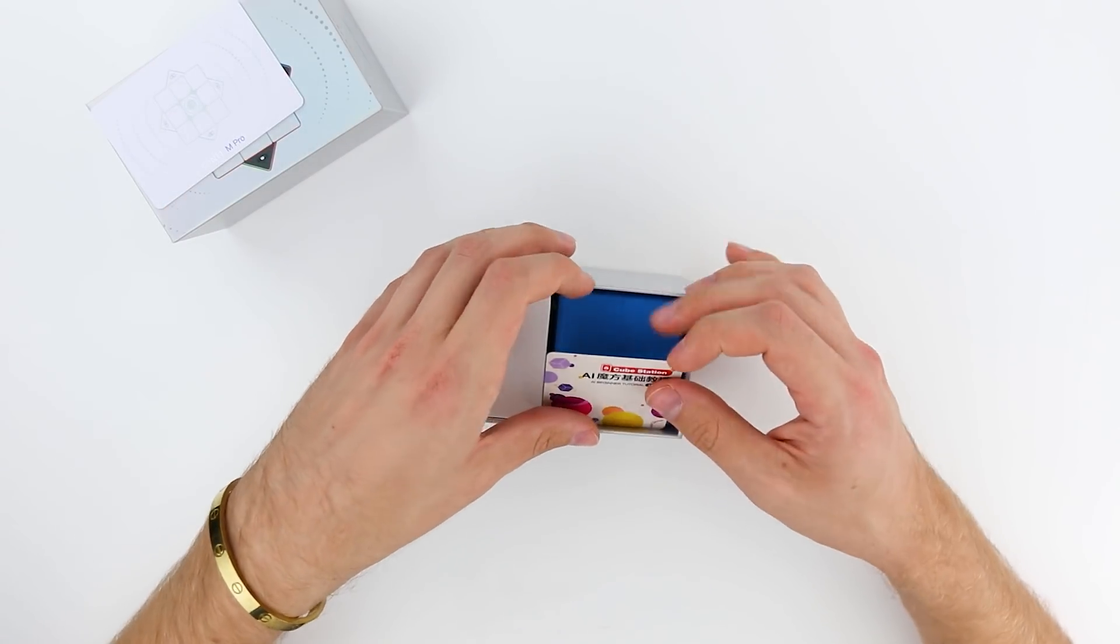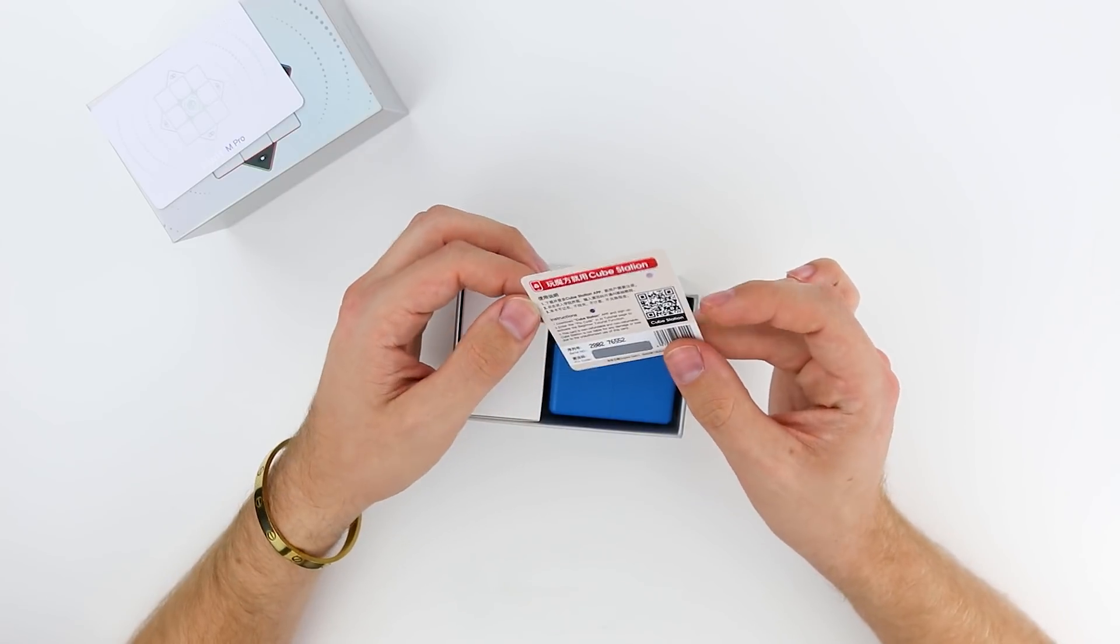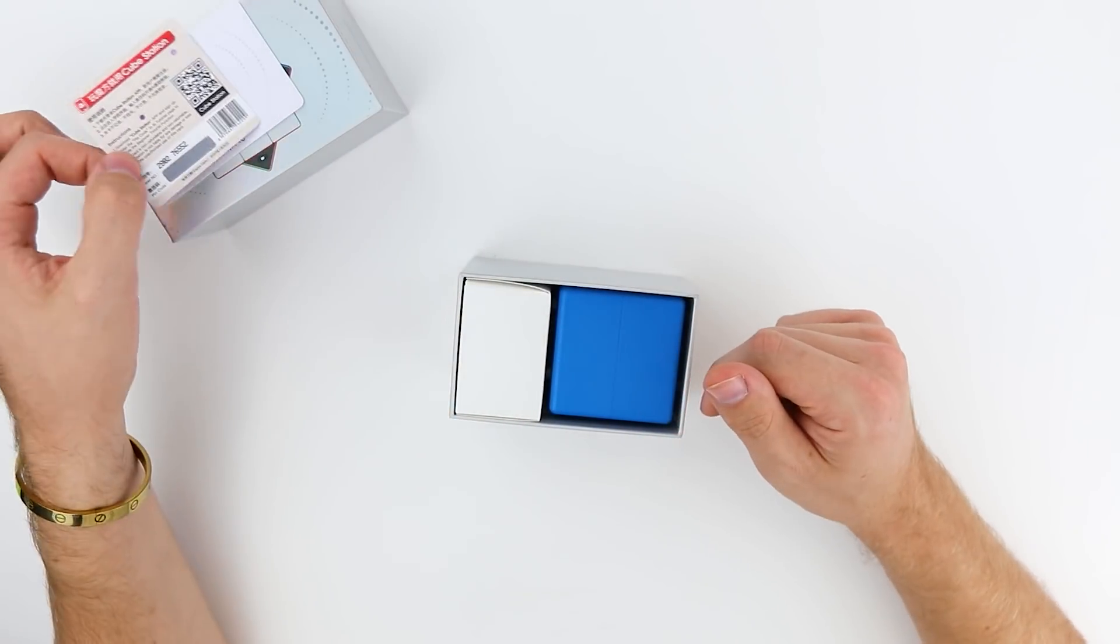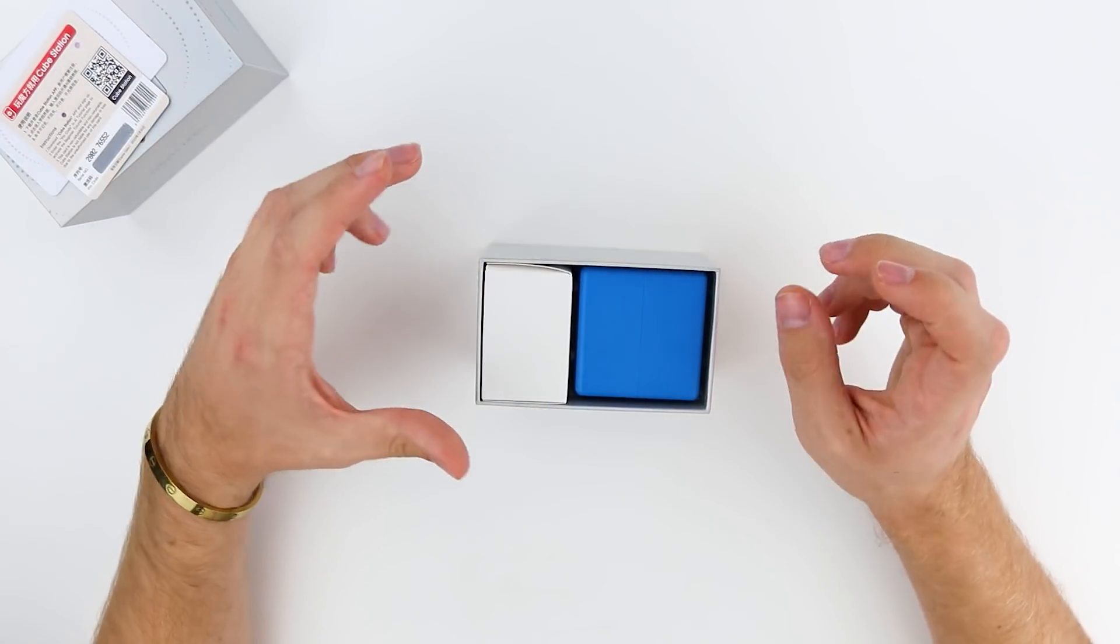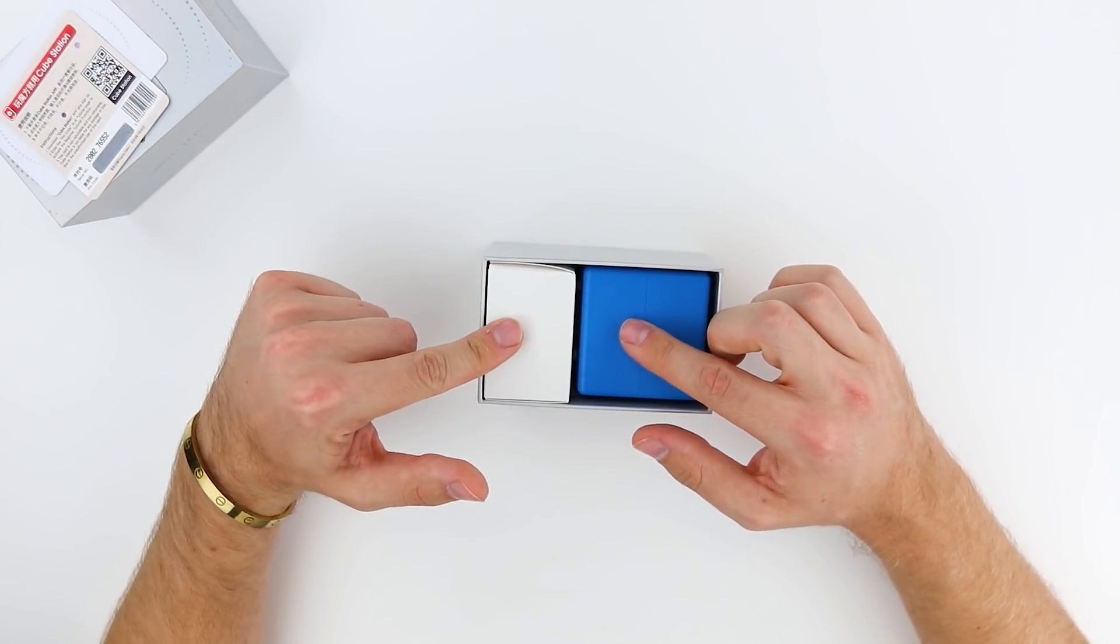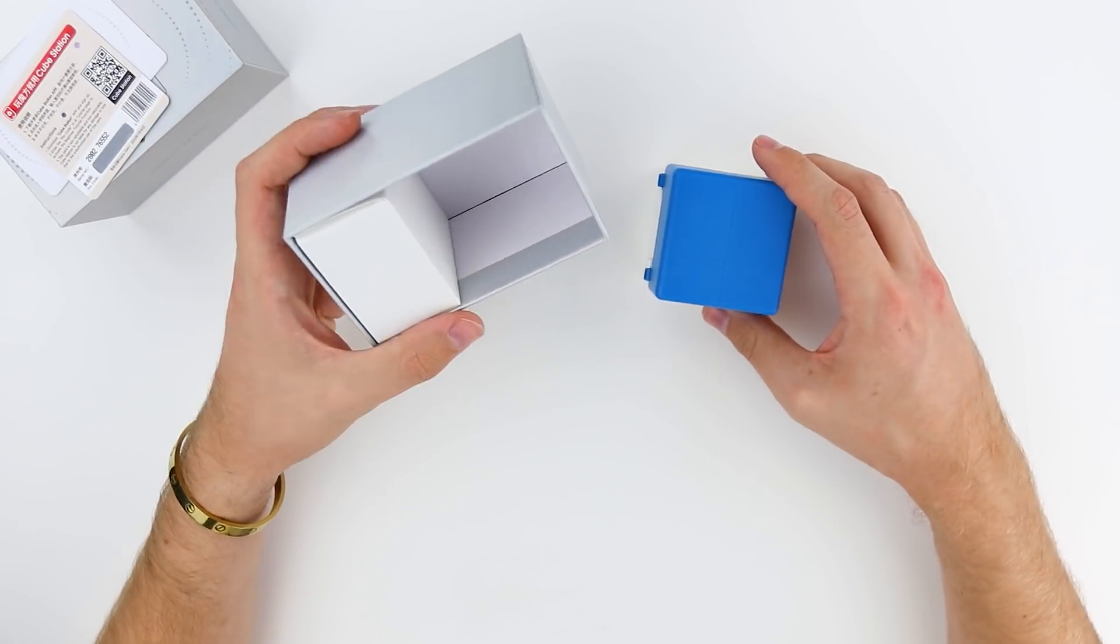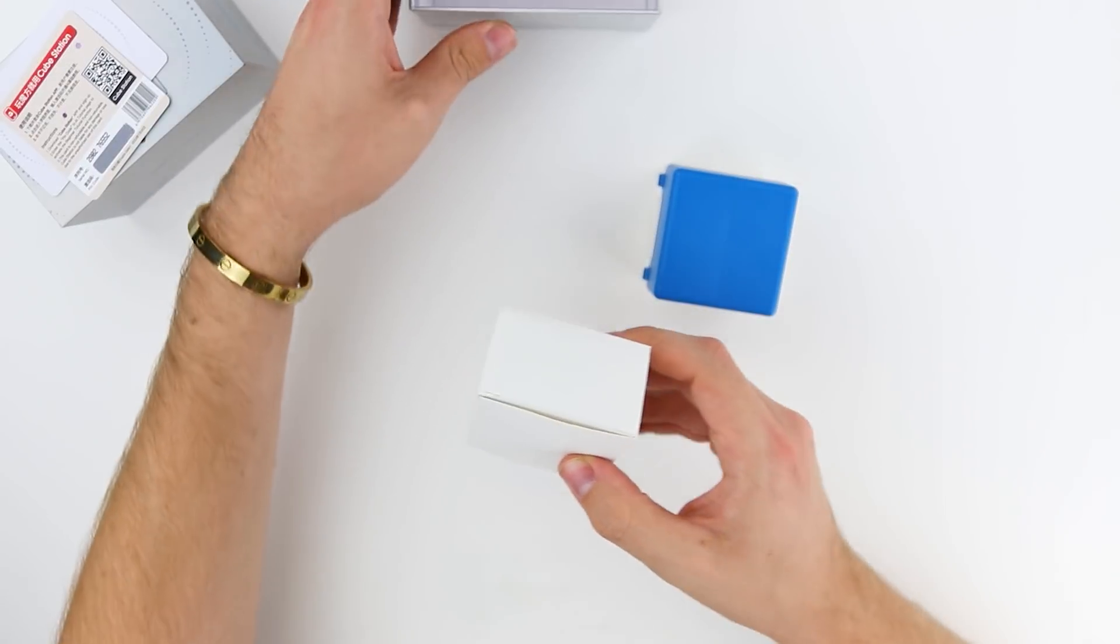Next up we have a cube station. A QR code that I guess if you have a cube that is compatible with Cube Station, you can download it there. And now we have the cube itself and the accessories. So the box for the cube looks pretty cool. But I think I'm going to save that one for the end and take a look at the accessory box first.